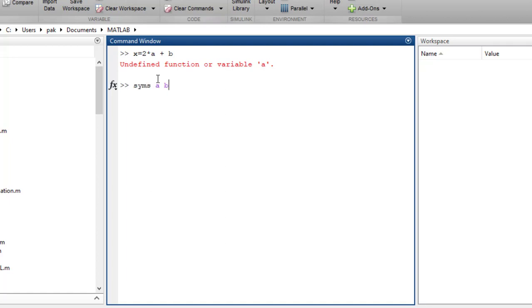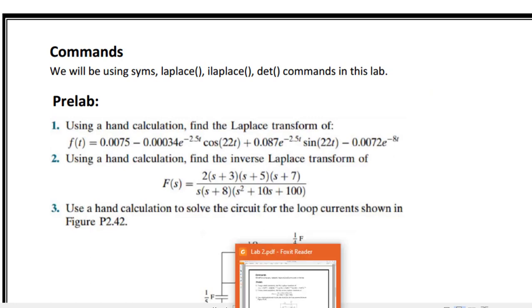So let's do something. SYMS a and b. I have declared a and b as symbols. Now I'll write the equation again x is equal to 2 times a plus b. And you can see that the same equation which was not being stored earlier is now being stored in x as 2a plus b. So how did it become possible? It's because of the Symbolic Math Toolbox where we declared the symbols a and b.